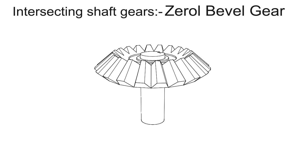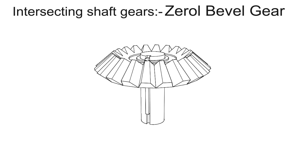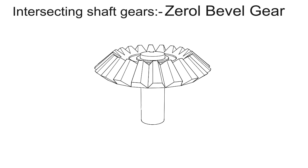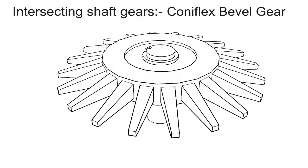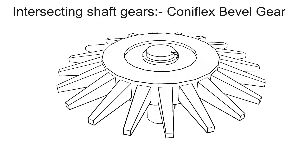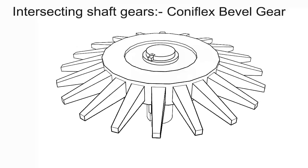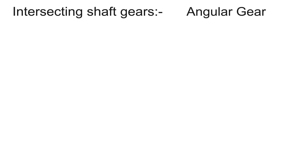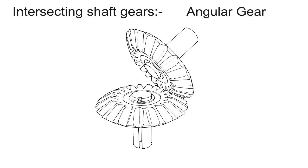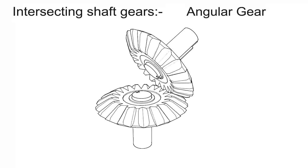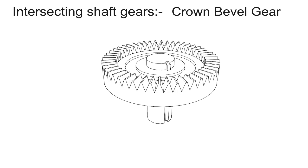Zero bevel gear — spiral bevel gears with curved teeth but with a zero-degree spiral angle are known as zero bevel gears. Coniflex bevel gear — it is a modified form of a straight bevel gear and has teeth in the shape of cutting blades. Angular gear — angular gears whose shafts are set at an angle other than 90 degrees are useful when the direction of shaft rotation needs to be changed. Crown bevel gear — a gear having teeth that project at right angles to the face of the wheel is called a crown bevel gear.